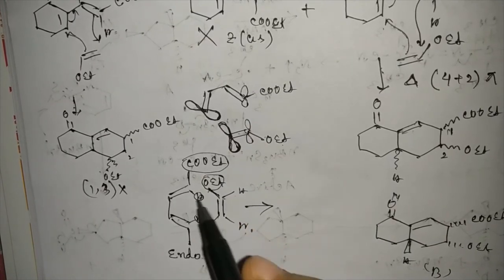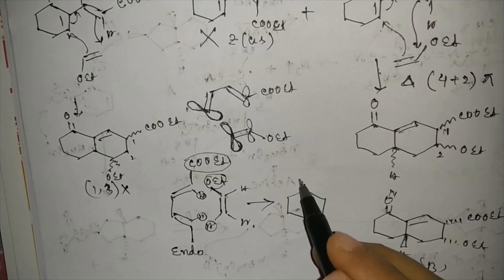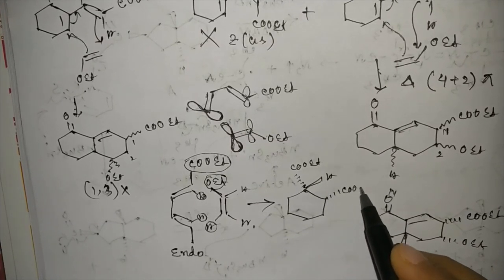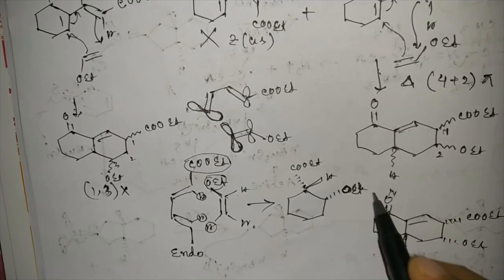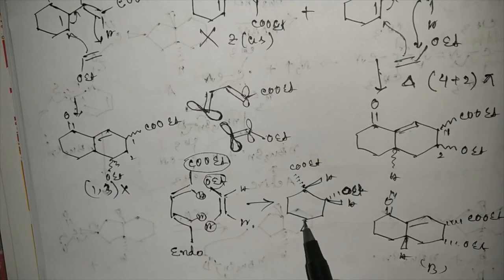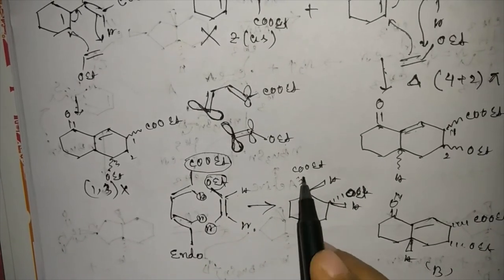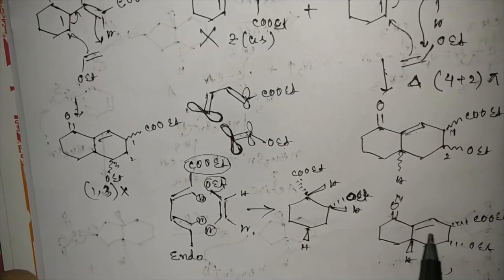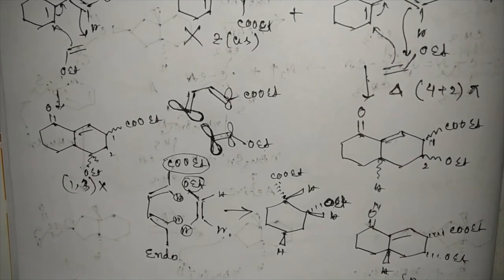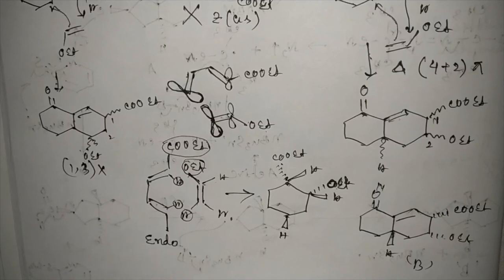The COOEt group goes below the plane and the hydrogen goes above the plane. This is exactly the stereoselectivity observed: the hydrogen is above the plane and both the COOEt and OEt groups are below the plane in the six-membered ring product. This is how the stereoselectivity in this Diels-Alder reaction arises. This is our final product B. If you have any doubts regarding this video, please let me know in the comment box, and subscribe to my channel. Thank you, have a good day.